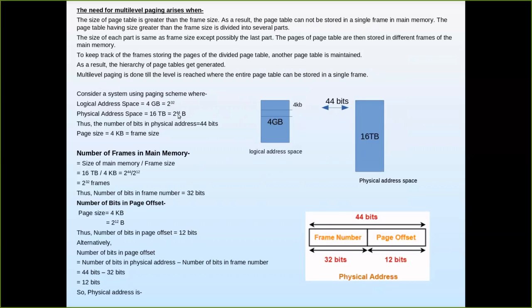Consider a system where the logical address space is 4GB (2^32), and the physical address space is 16TB (2^44). So 44 bits are needed to address each location in physical memory, whereas 32 bits are needed for logical addresses. The page size given is 4KB, and since page size equals frame size, the frame size is also 4KB.